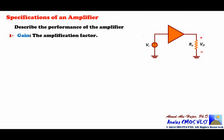The most important specification of an amplifier is the gain, which basically tells us the amplification factor — how much the output differs from the input. The gain is usually a function of frequency, so we express it using the transfer function. We can express the gain in the S domain as A(s) = Vout(s) / Vi(s). We can convert the transfer function to the frequency response by replacing s with jω, giving A(jω) = Vout(jω) / Vi(jω).